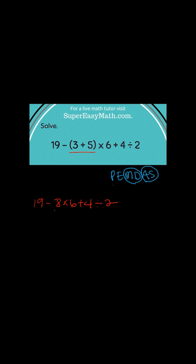Now I'm going to multiply 8 by 6 and I'm rewriting the whole problem. But instead of writing the 8 times 6, I'm going to write what that equals, which is 48 plus 4 divided by 2.